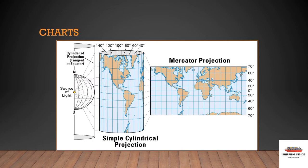Because the earth is a sphere, depicting it on a flat page creates a lot of problems. There are several examples of solutions to this problem, known as projections. The projection you are most likely to encounter in the shipping business is the Mercator projection. The Mercator projection is based on the idea of wrapping a cylinder of paper around the globe and projecting an image of the world on it.